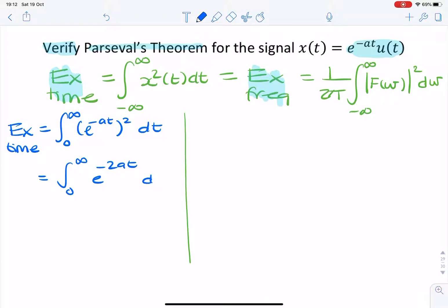So that's minus 1 over 2a times e to the minus 2at from 0 to infinity.